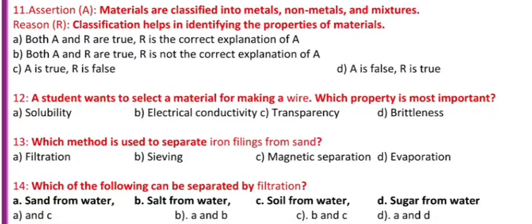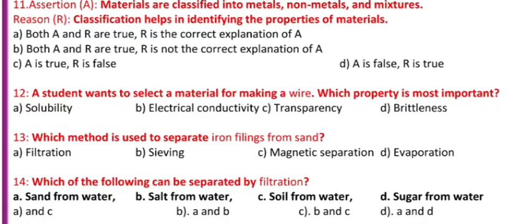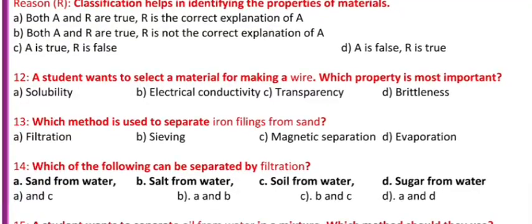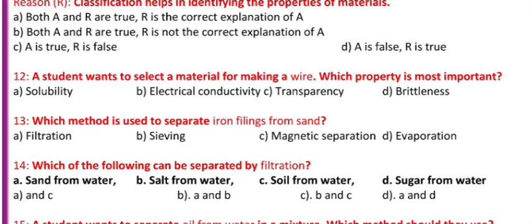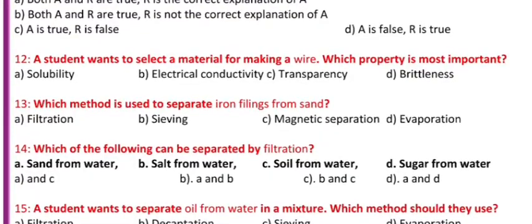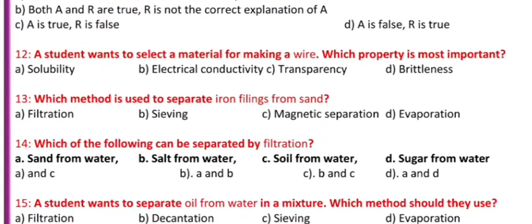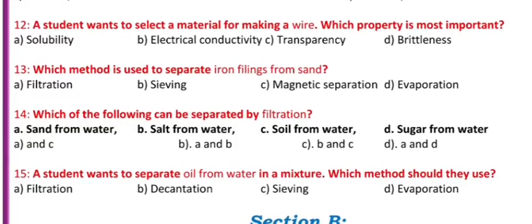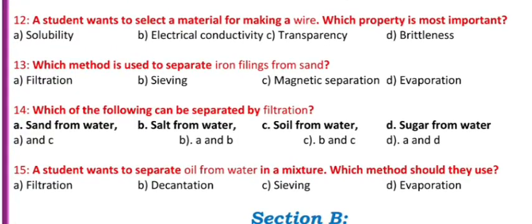Question 11: Assertion A - Materials are classified into metals, non-metals, and mixtures. Reason R - Classification helps in identifying the properties of materials. a) Both A and R are true, R is the correct explanation of A. b) Both A and R are true, R is not the correct explanation of A. c) A is true, R is false. d) A is false, R is true.